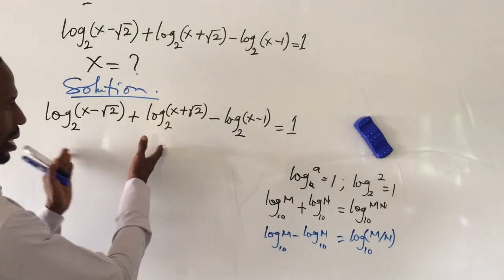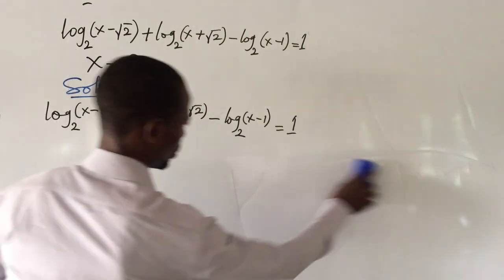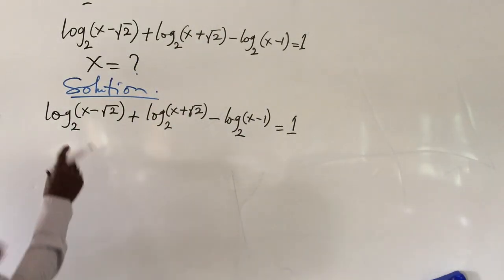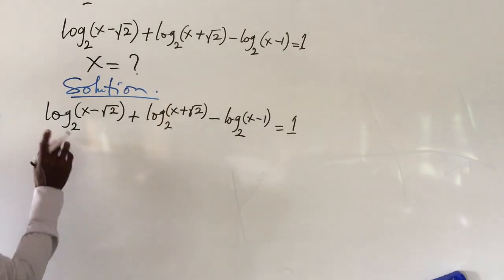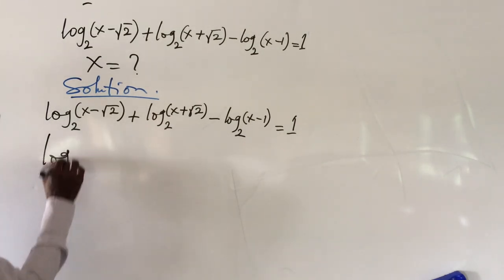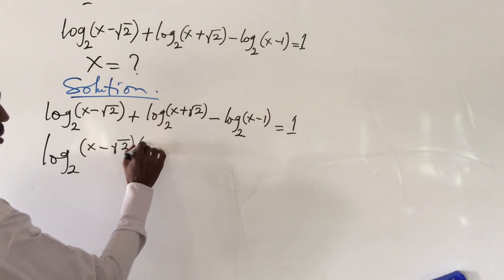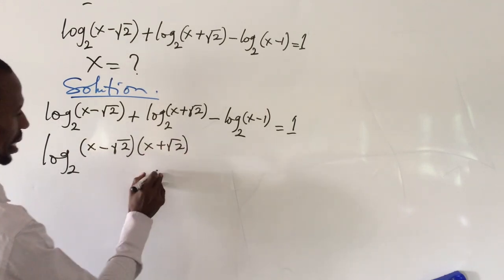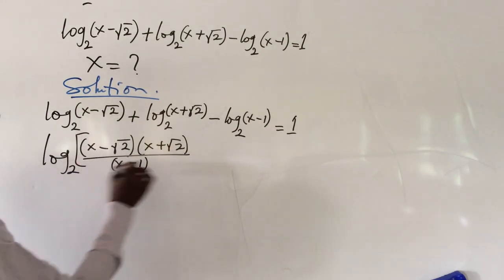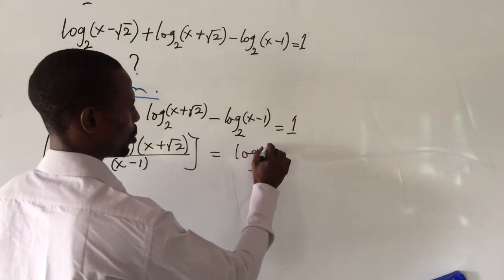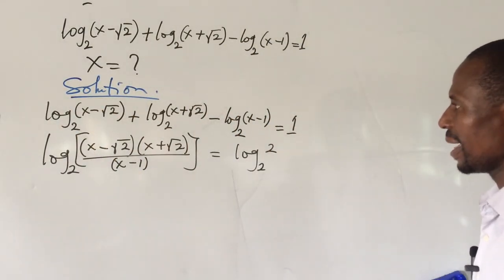So let's go on and apply these laws and see how they help us solve this. Since we have a plus sign, we multiply this by this and divide by this — because they all share the same base. So we have log base 2 of bracket (x minus root 2) times (x plus root 2), all over (x minus 1), equal to log 2 base 2, which equals 1.